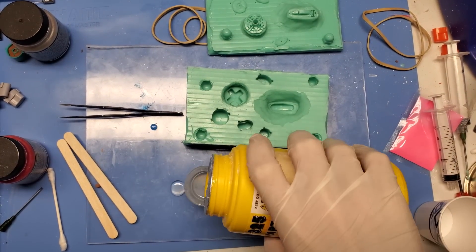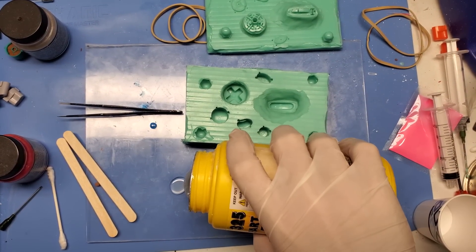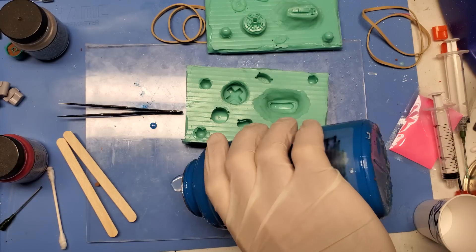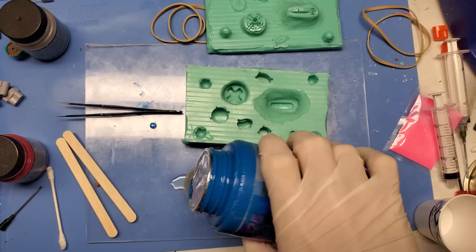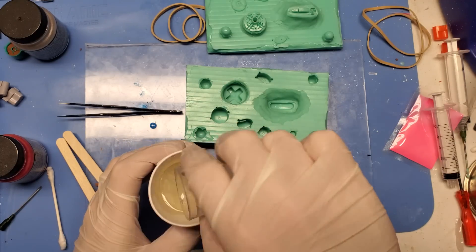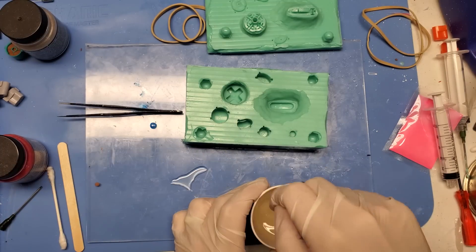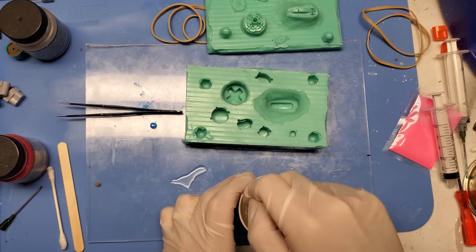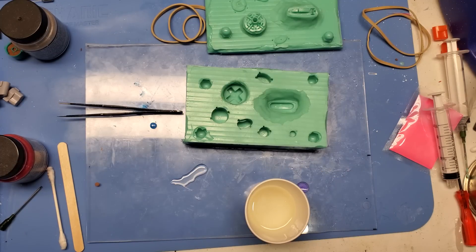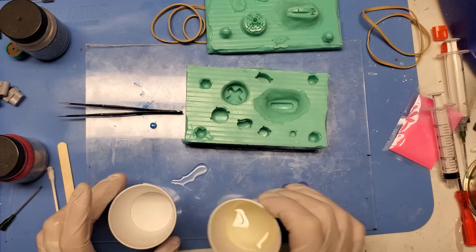Okay, after all that work, we finally get to cast some buttons. So I'm going to use some SmoothCast 325 which is an amber clear resin, it's a urethane based resin, and we're going to go ahead and mix that up with some of our pink powder to get us our nice pink buttons. The thing I really like about this particular resin is it does cure very quickly in about 20 minutes and I will be using a pressure pot so we should be getting some nice bubble free buttons.